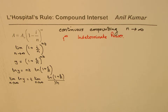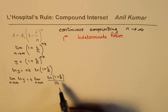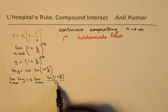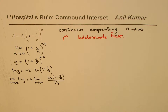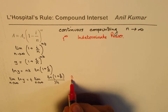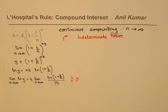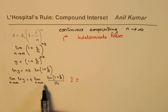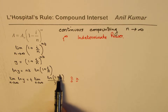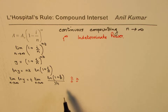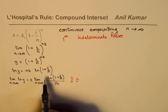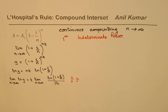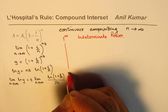This gives the indeterminate form 0/0: when N is infinity, 1/n → 0, and ln(1 + 0) = ln 1 = 0. So the numerator is 0 and the denominator is 0. We can now apply L'Hôpital's rule, which means the limit of the quotient of functions equals the limit of the quotient of their derivatives.